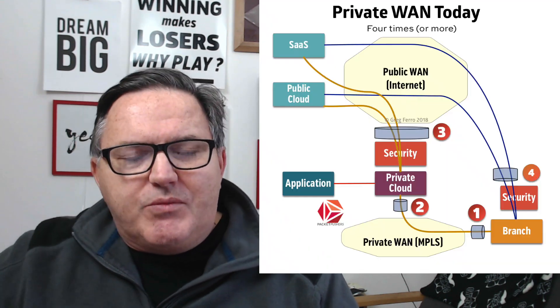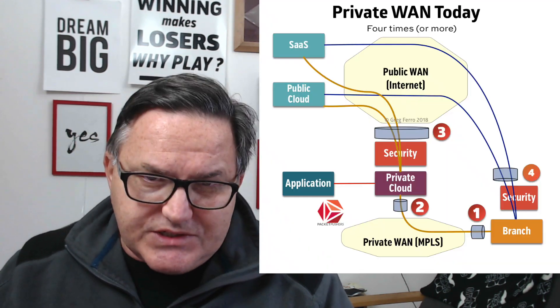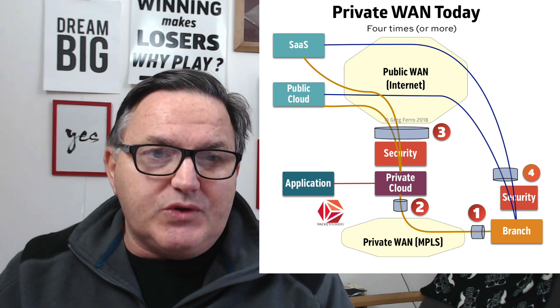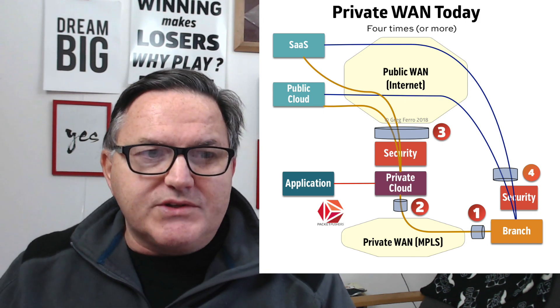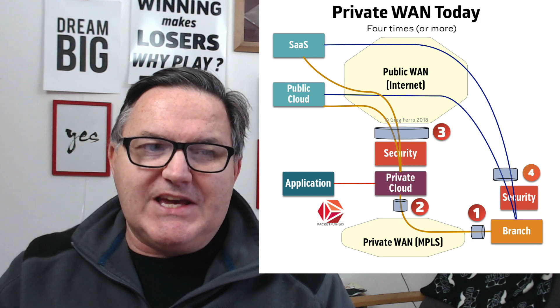And increasingly, what we're actually seeing — so that's three, because your internet connection is still needed for that, even if it's just for internal email. So one, two, three — but there's also increasingly a fourth bandwidth coming out here, where quite often we're doing local breakout. So you're putting a security function in the branch, you've got an internet connection there, and you're actually allowing that out.